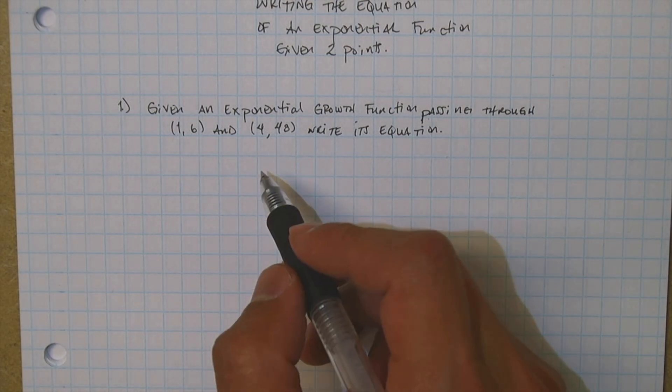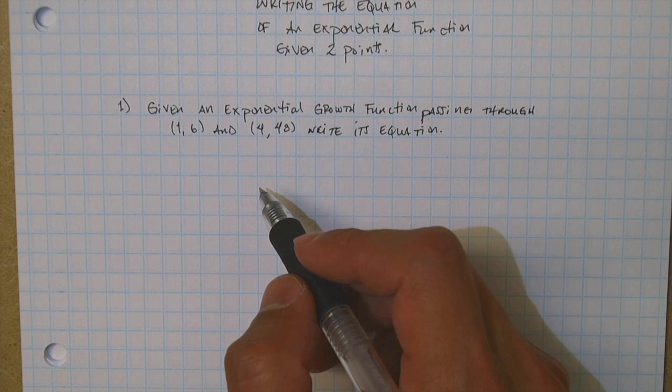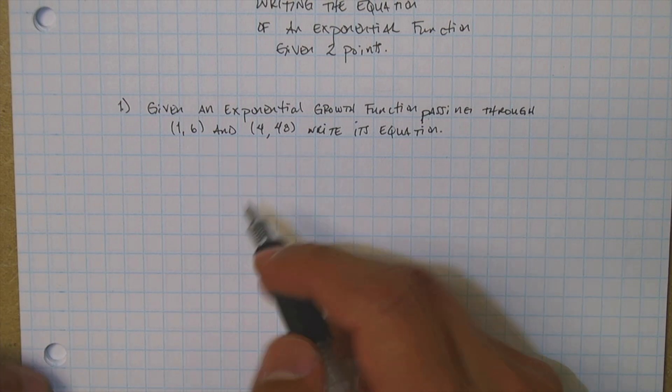Hey guys, I want to go ahead and talk about how to write the equation of an exponential function when they give you two points.